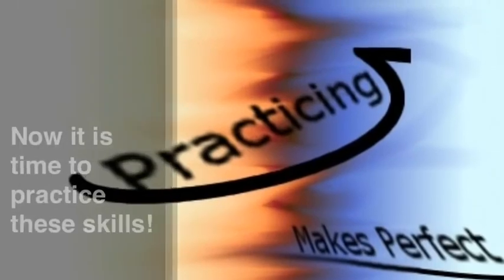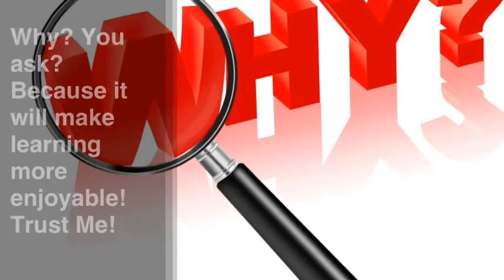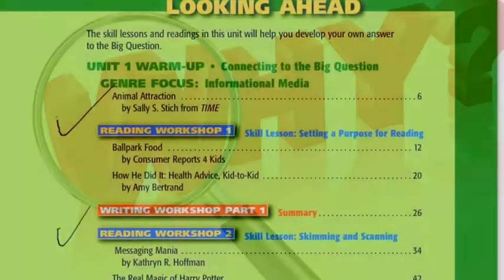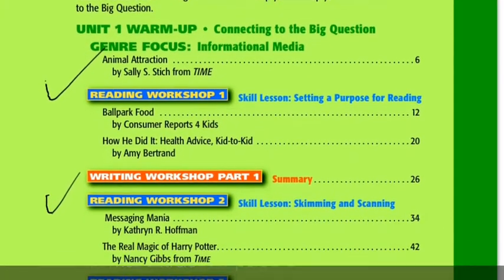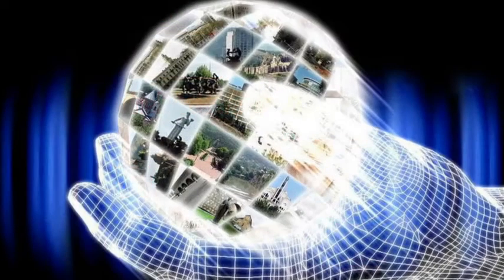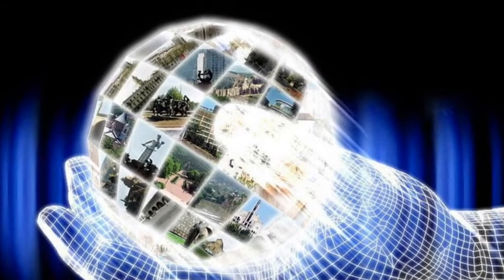Now it's time to practice these skills. Why? Because it will definitely make learning much more enjoyable for you — trust me. So turn to the story called Animal Attraction in your textbook; it can be found on page 6. Be sure to use the notes in the side column that model how to use these skills and elements when you read from page 5. We'll discuss this in class tomorrow. Good luck, have fun, and we'll see you in the morning.